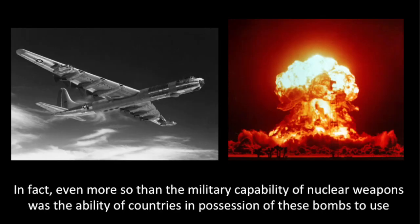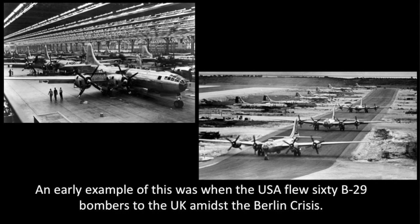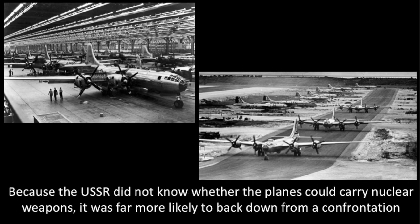In fact, even more so than the military capability of nuclear weapons was the ability of countries in possession of these bombs to use nuclear blackmail — the threat of a nuclear attack — to get what they wanted politically. An early example of this was when the USA flew 60 B-29 bombers to the UK amidst the Berlin crisis. Because the USSR did not know whether the planes could carry nuclear weapons, it was far more likely to back down from a confrontation.